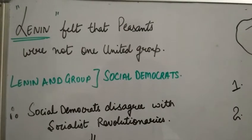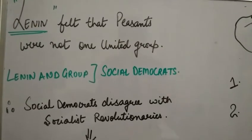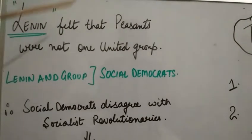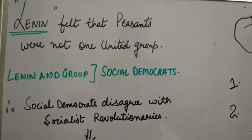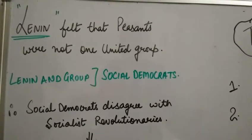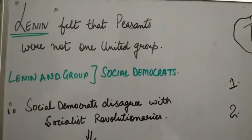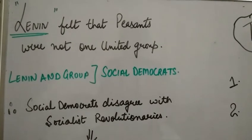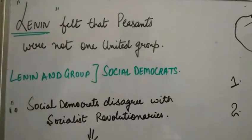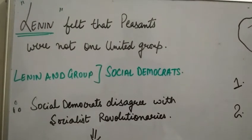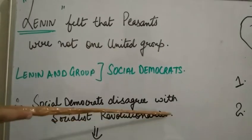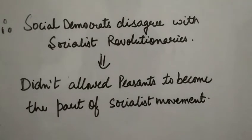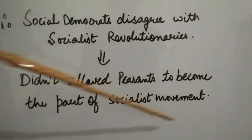However, there is a twist here: the Social Democrats disagreed with the Socialist Revolutionaries. Lenin, who was one of the Social Democrats, argued that peasants are not a united group — because there is a division among them, some being very rich and some very poor — therefore they cannot stand united together. He said peasants can never bring reform; it is always the workers who will bring in the revolution. So Lenin and the Social Democrats disagreed with the Socialist Revolutionaries, and they did not allow the peasants to become part of the socialist movement.